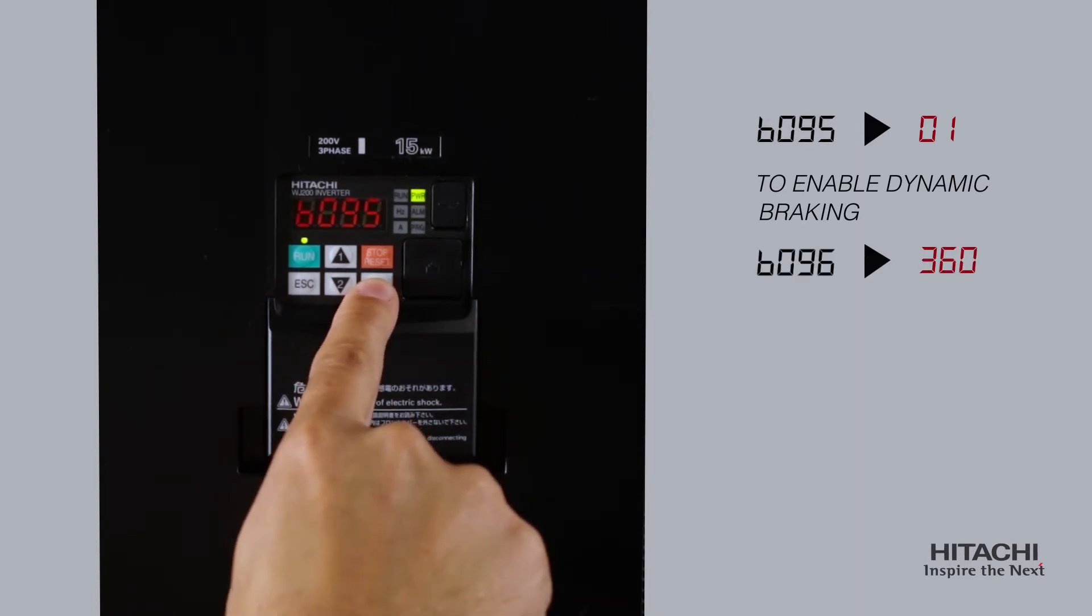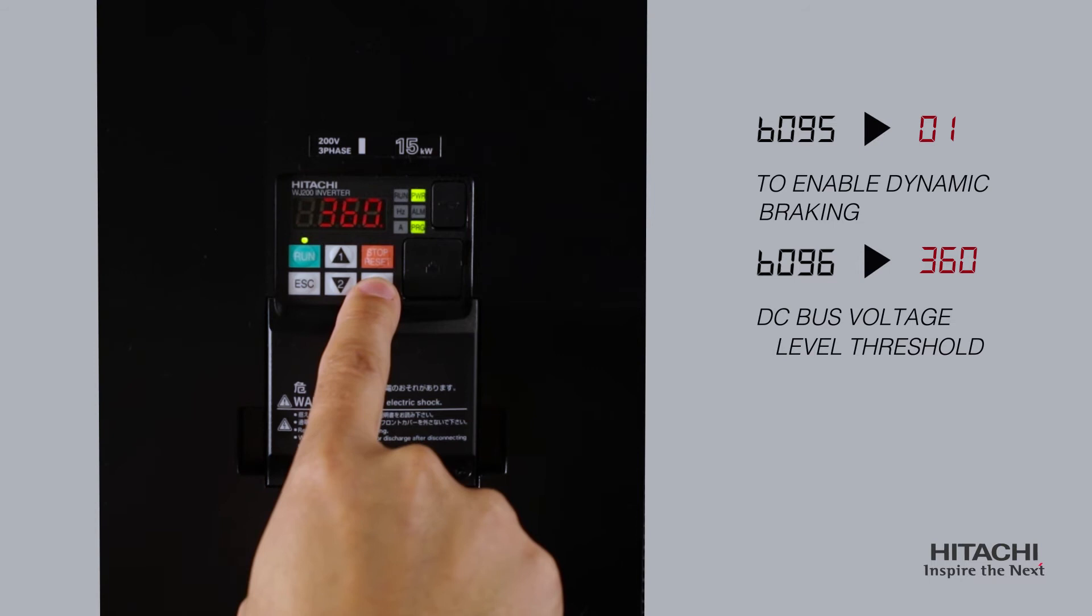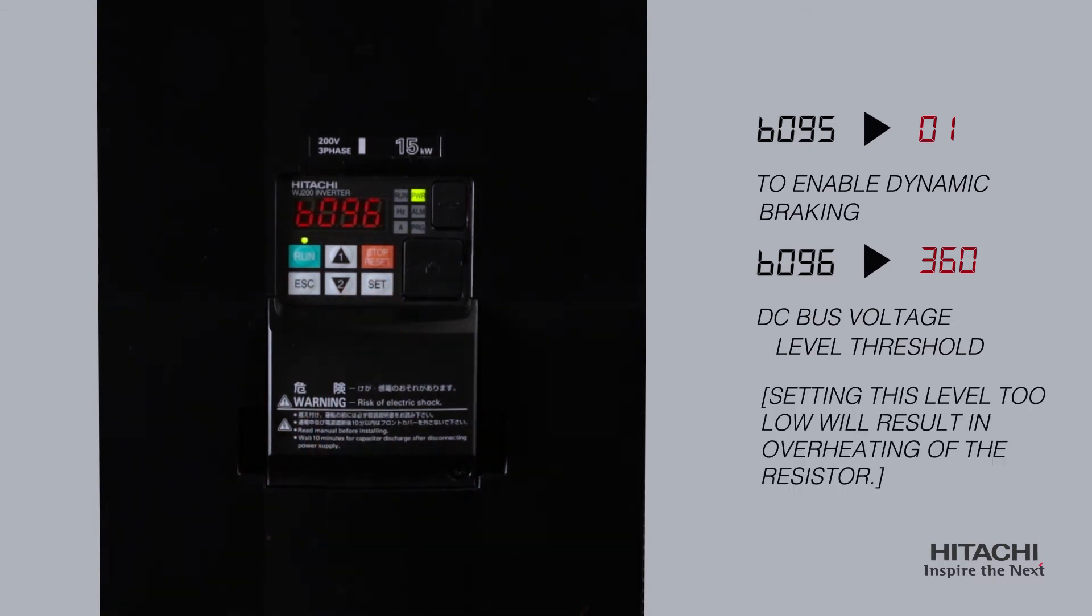Set B96 to the desired DC bus voltage level threshold. Default is 360 or 720 volts. Please note, setting this level too low will result in overheating of the resistor by activating the braking circuit prematurely.